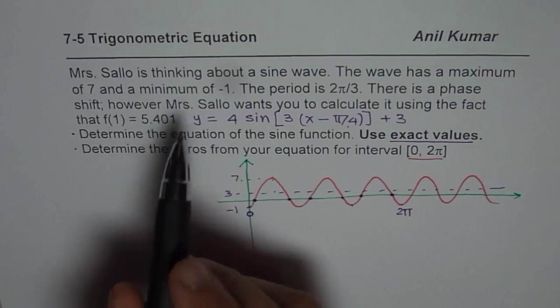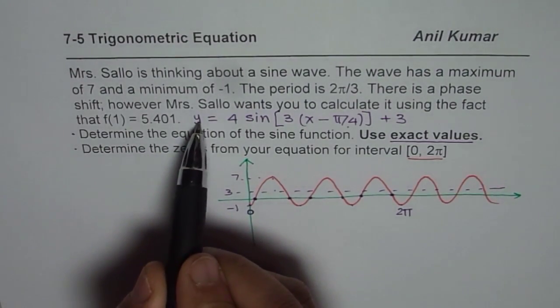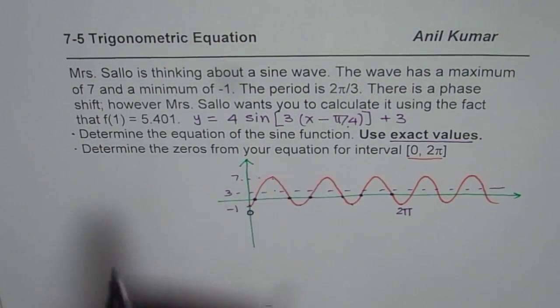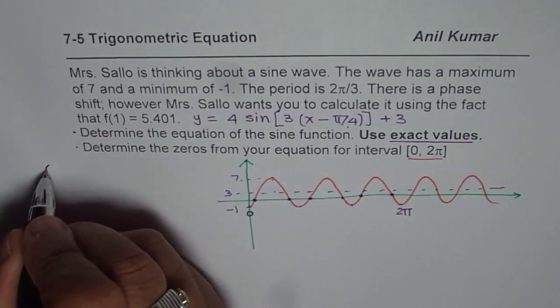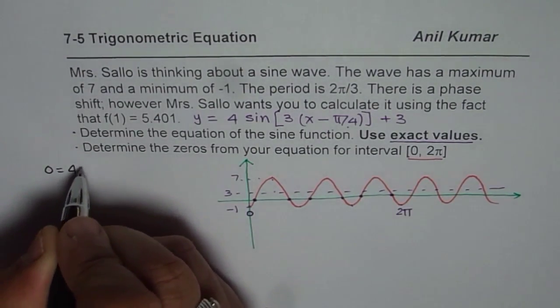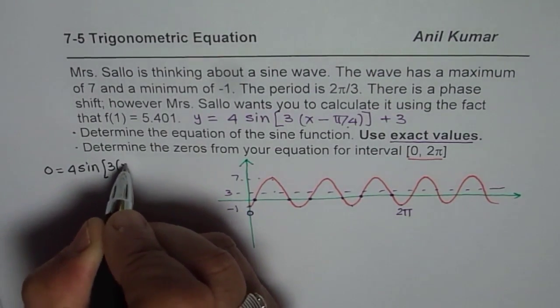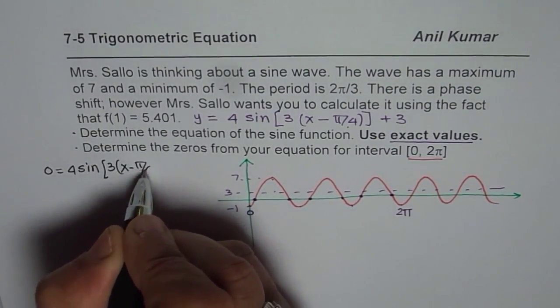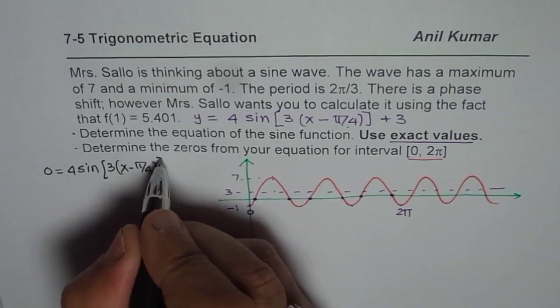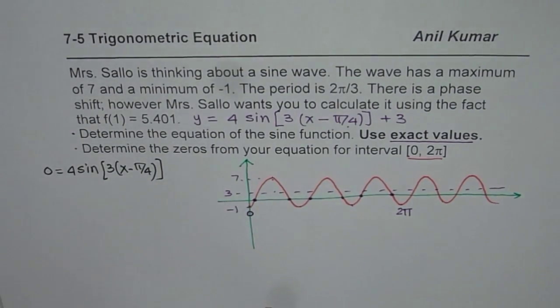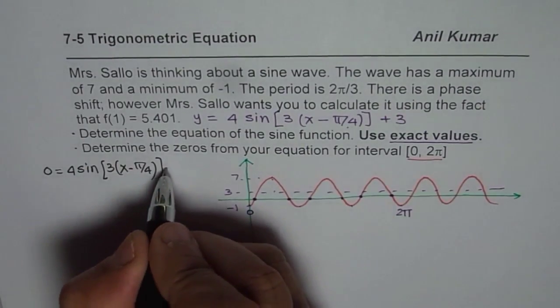Now let me show you how to find a zero. Finding zero really means to equate y as equals to 0 and find the value of x. So we will do that. So we will say 0 = 4sin[3(x - π/4)] + 3. To find zero we have to take 3 to this side. So -3 = 4sin[3x - π/4].